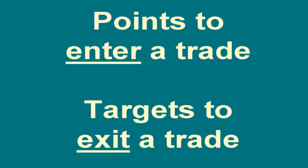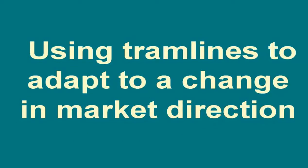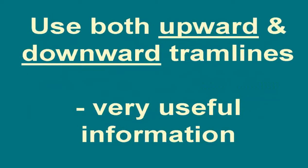In the introductory video, I focused on obtaining low-risk entries. I will also explain how you use tramlines to adapt to a significant change in market direction. For example, where a rising market looks like it's turning into a falling market, you will need to start drawing tramlines in the downward direction. Interestingly, you can then use both sets of tramlines — the upward and downward sets — to give you very useful information.